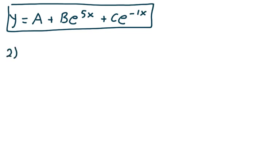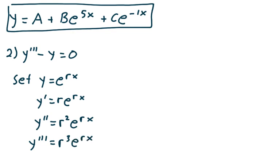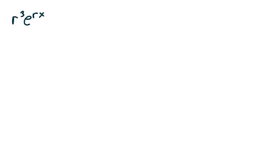Let's take a look at example 2. Suppose we had y triple prime minus y equals 0. Just like in example 1, we're going to set y equal to e to the rx. y prime is r e to the rx. y double prime is r squared e to the rx. Making my substitution, I get r cubed e to the rx minus e to the rx equals 0. Since e to the rx is never 0, therefore r cubed minus 1 equals 0.